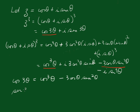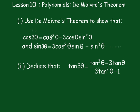And the imaginary part gives us sin3θ equals 3cos²θ sinθ minus sin³θ. That completes part one.